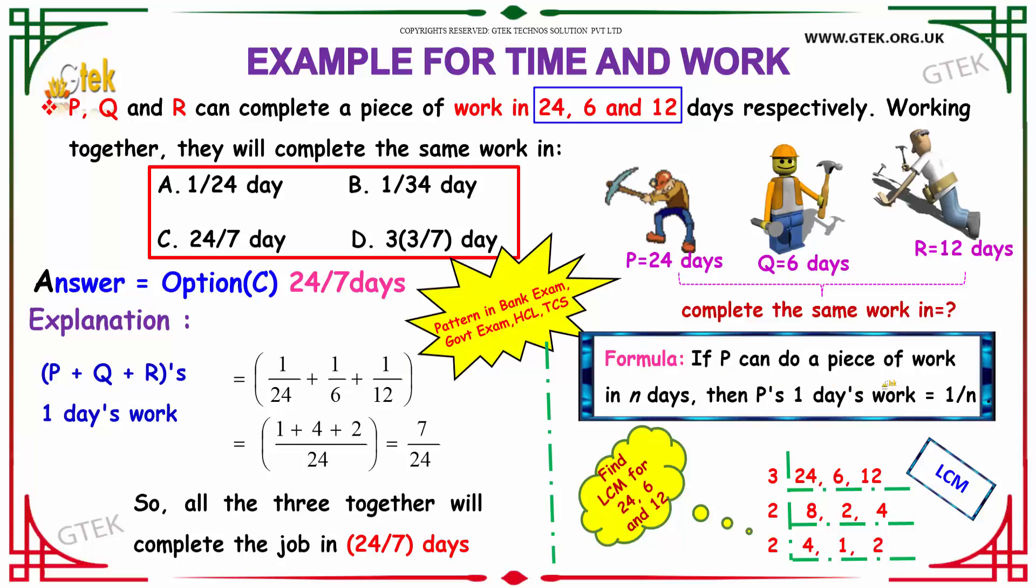As we know that, if P can do a piece of work in n days, then P's one day work will be 1 by n. So, you have the LCM for 24, 6 and 12 as 3 into 2 into 2. That gives you 24. Adding up the numerator values that is 1, 4 and 2 you get 7 by 24.